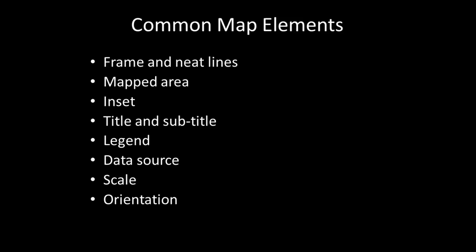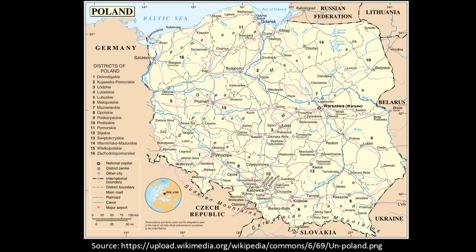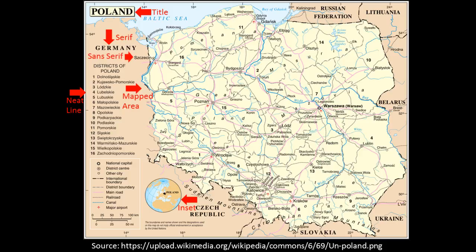Looking at a map of Poland, many of the standard elements can be seen. The frame and neat lines define the edge of the map. The mapped area uses a figure-ground relationship to contrast Poland shown in yellow with the surrounding country shown in light brown. The inset shows the broader context for where Poland is located in the world. The map title for Poland and surrounding country names are shown using a serif font, while names of cities in Poland use a sans-serif font. The map legend shows many examples of ordinal data in terms of ranking cities and boundary types. Scale bars are shown in both kilometers and miles.